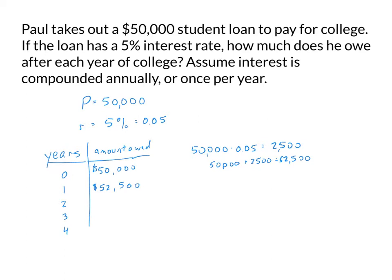For year 2, at the end of our second year of college, we take $52,500 and multiply by 0.05. Because we owe more money, we accrue more interest — that is $2,625 in interest after our second year of school. We add that to $52,500, giving us $55,125. After year 2, we owe $55,125.